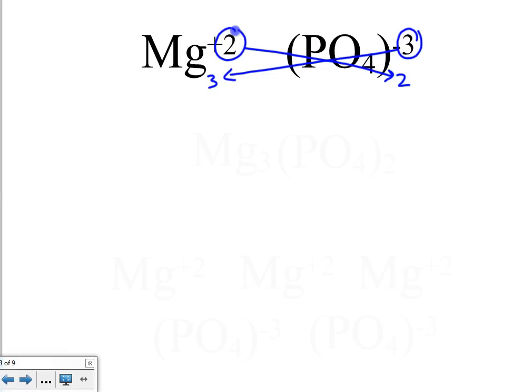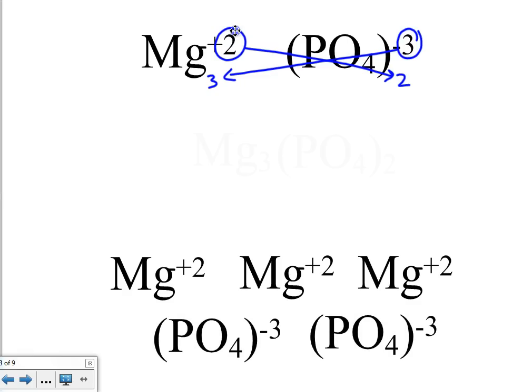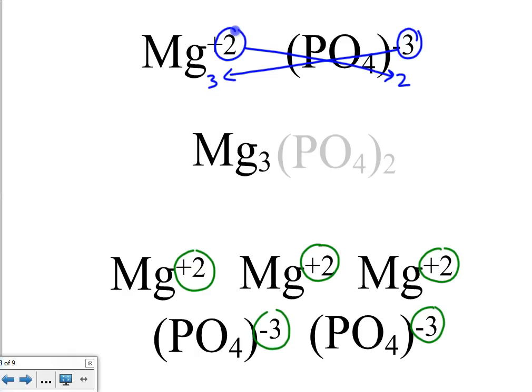If we rewrite this, we have 3 magnesium plus 2 ions — that's what that subscript means — and 2 phosphate ions, each negative 3. If you add up all these charges, plus 6 minus 6, it ends up being neutral. When we rewrite this formula, it is written as Mg₃(PO₄)₂, because we're trying to show that we need 2 of these very distinct PO₄ ions.